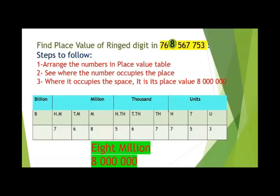Our first target is to find the place value of the ringed digit in 768,567,753. You can see that eight is the ringed digit and we have to find the value of the eight. For this, we have to follow the steps.